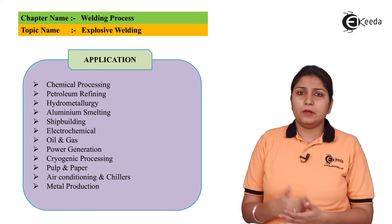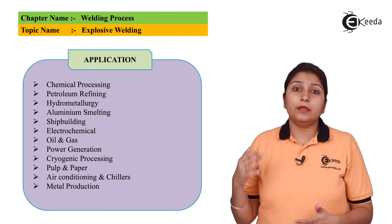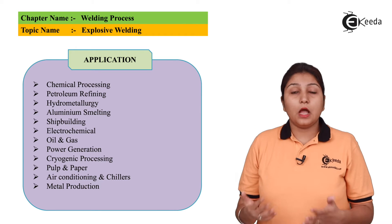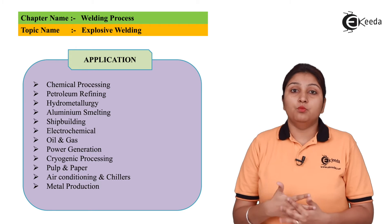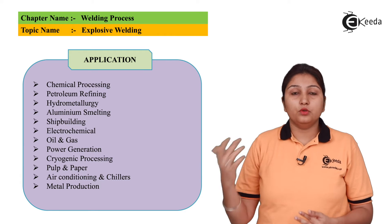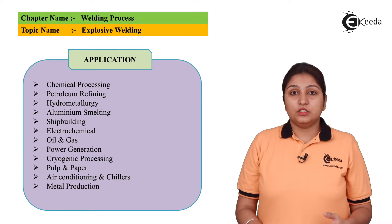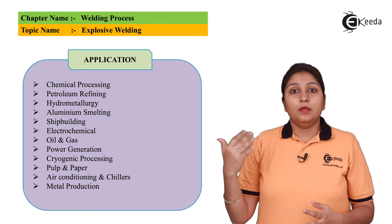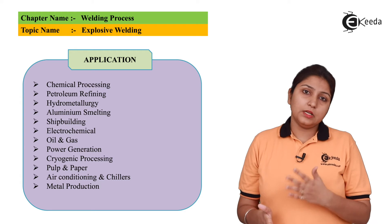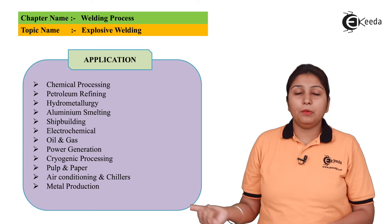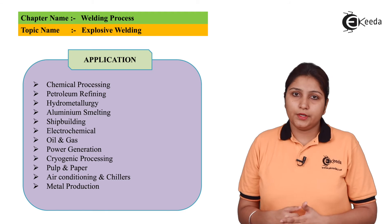So these are some applications. Basically, explosion welding clads are used where the pressure factor is more, like if you are using it in boilers, ship buildings, pressure vessels, etc. So these are some basic applications of explosive welding.